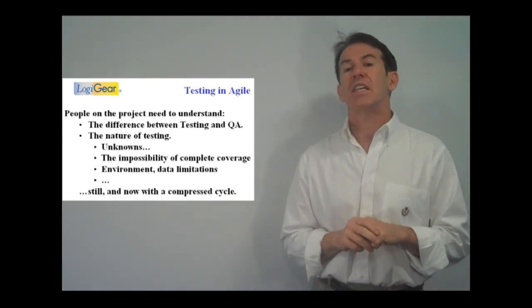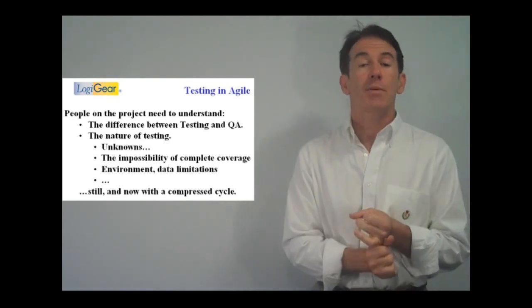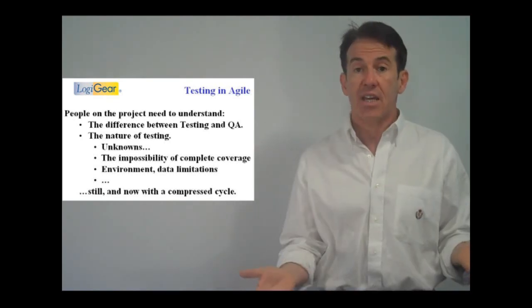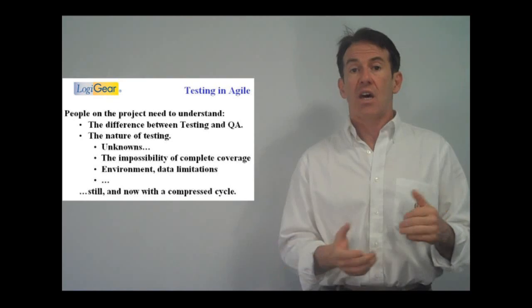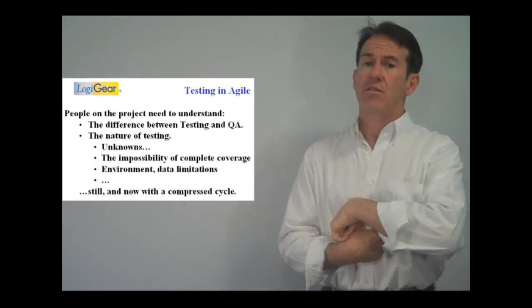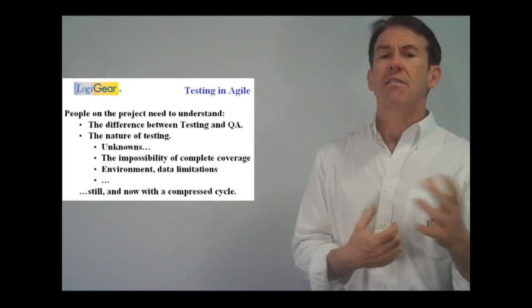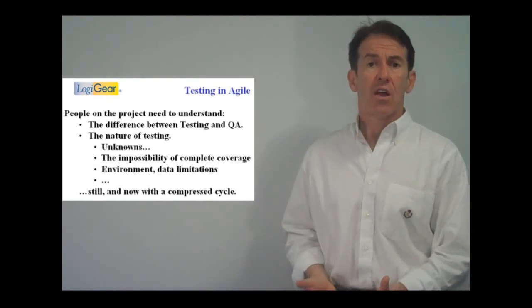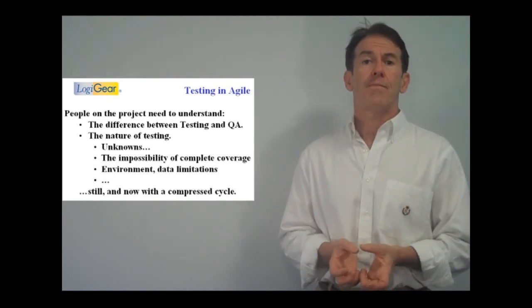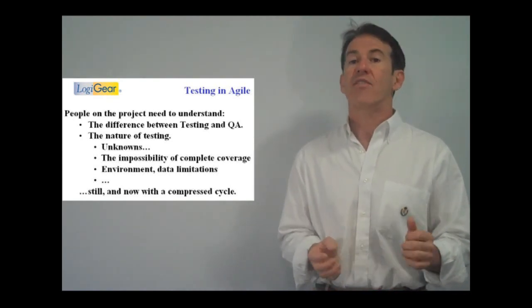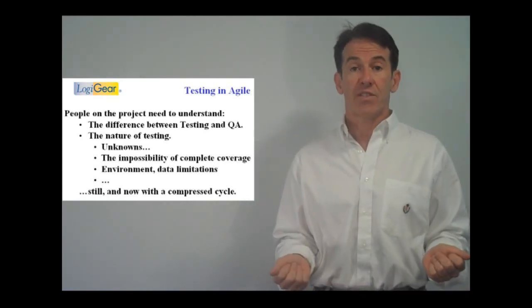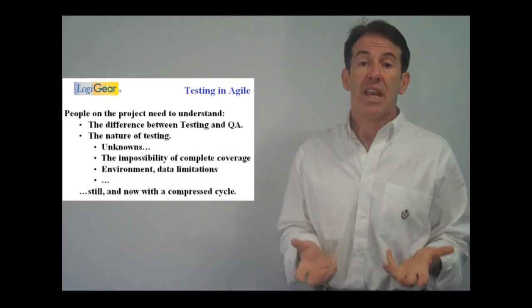The team also has to understand the nature of testing, the impossibility of complete coverage, that we can test the same function with infinite pieces of data, different data formats, different sizes, and all the types of data, rare data, boundary data, all that kind of stuff that's really the nuts and bolts of our testing job. The team has to know that we will never exhaustively test every single piece of data in every single path and every single function. That's just not the nature of testing.